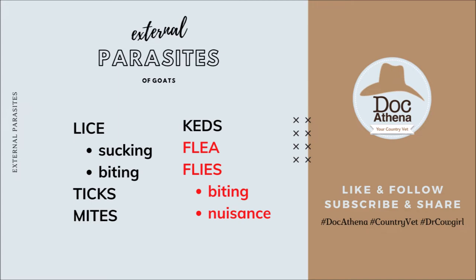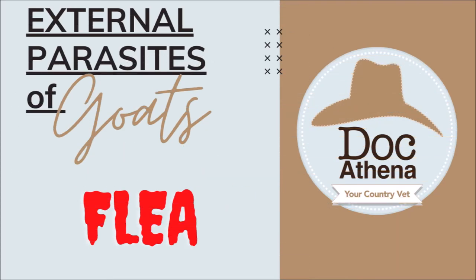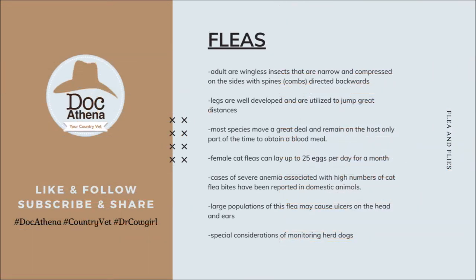Flies can be further categorized as biting or nuisance flies. Let's start with fleas. The adults are wingless insects that are narrow and compressed on the sides with spines called combs, directed backwards. Similar to lice from Part 1, fleas are also wingless, flattened ectoparasites. However, for fleas, their legs are well-developed and are utilized to jump great distances.